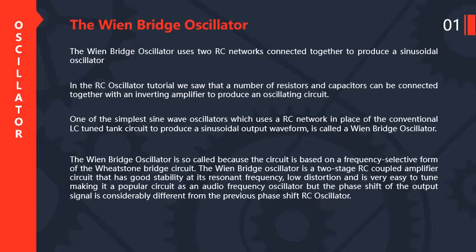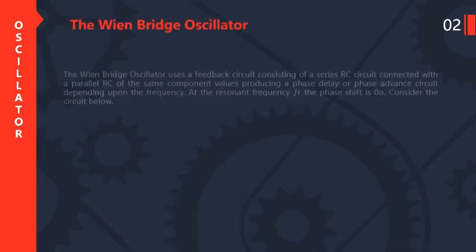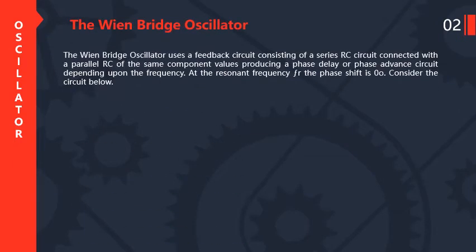The Wien's bridge oscillator is also named because the circuit is based on a frequency selective form of the Wheatstone bridge circuit. It is a two-stage RC coupled amplifier circuit that has good stability at its resonance frequency, low distortions, and is very easy to tune, making it a popular circuit as an audio frequency oscillator. The Wien's bridge oscillator uses a feedback circuit consisting of a series RC circuit connected with a parallel RC of the same component value, producing a phase delay or phase advance circuit depending upon the frequency. At the resonant frequency FR, the phase shift is 0 degrees.